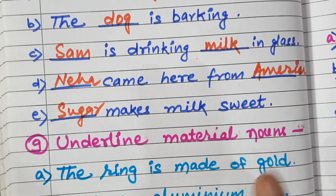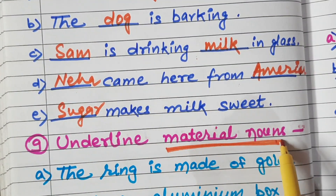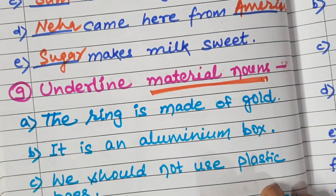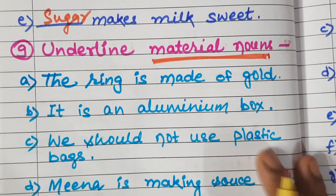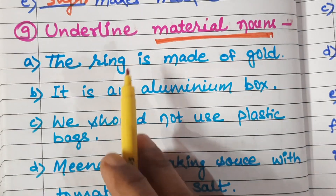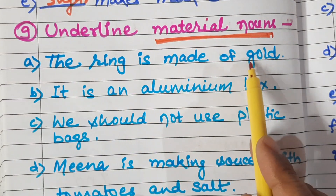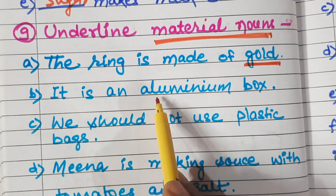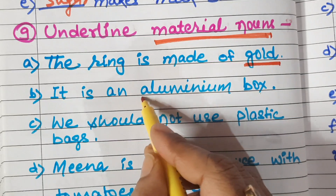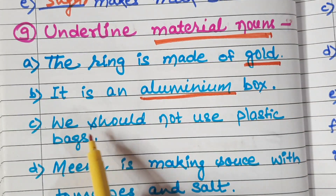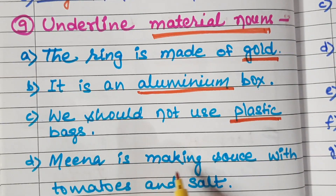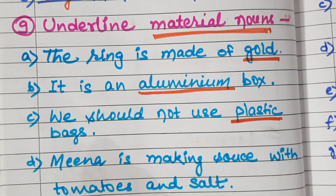Now, underline the material noun. Material nouns are nouns used for making something. For example: the ring is made of gold — gold is the material noun, underline it. It is an aluminum box — aluminum is the material noun. We should not use plastic bags — plastic is a material noun. Mina is making sauce with tomatoes and salt — these are all material nouns.